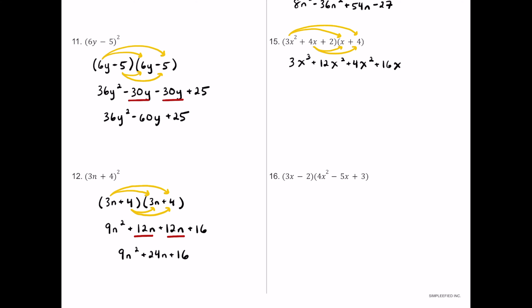Moving to the constant 2: 2 times x is positive 2x. Then 2 times positive 4 is positive 8. Combining like terms: 3x cubed stays alone. 12x squared plus 4x squared is 16x squared. 16x plus 2x is 18x. And positive 8 comes along for the final simplified product.